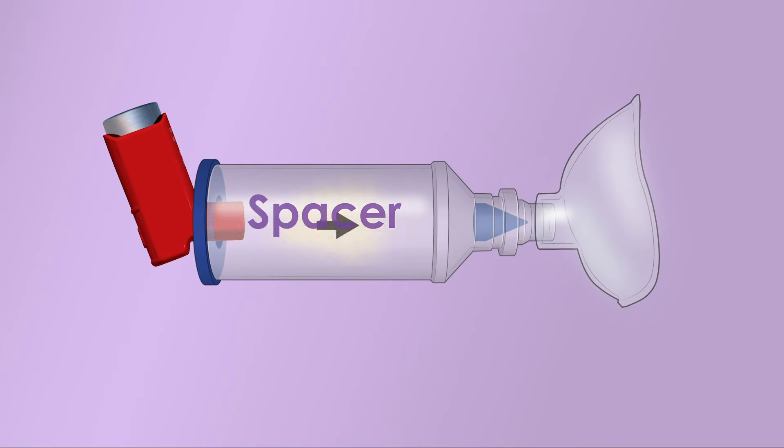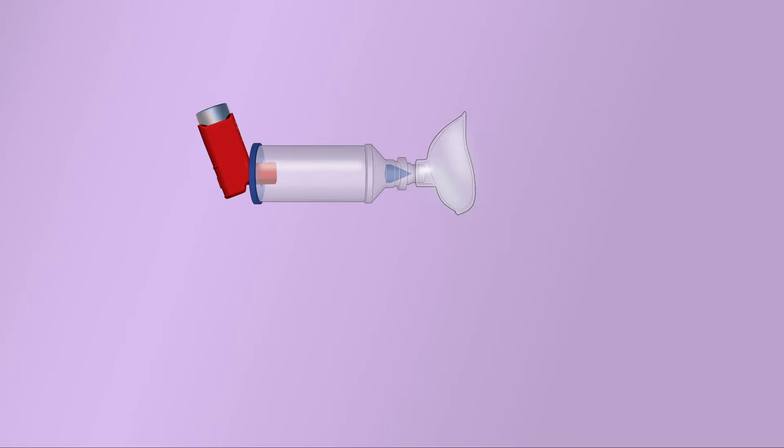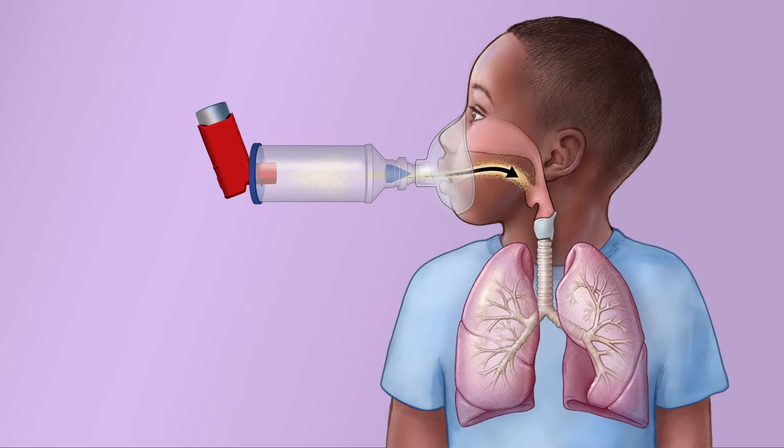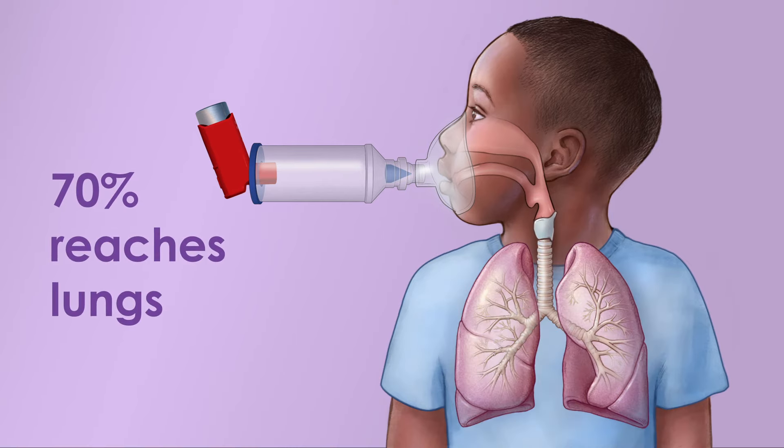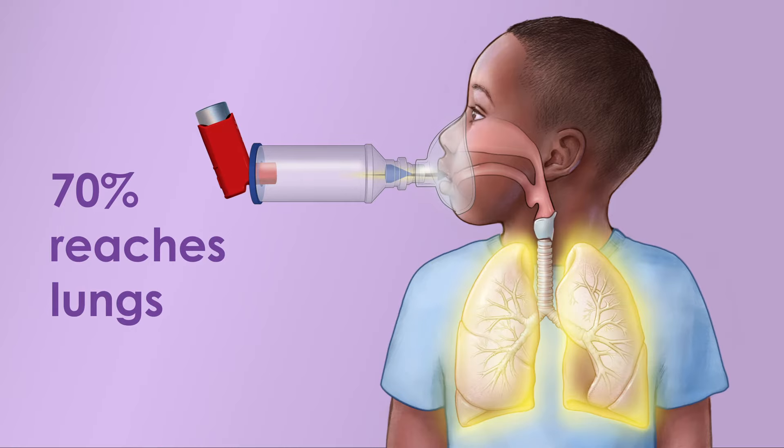When your child uses an inhaler with a spacer, the medicine is sprayed into the spacer. As the child breathes in, it pulls the medicine into the bronchiole and travels all the way into the lungs. In this method, about 70% of the medicine in a single puff reaches the lungs.